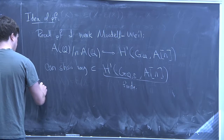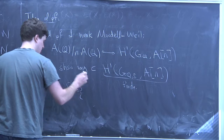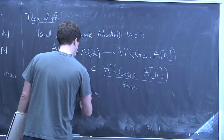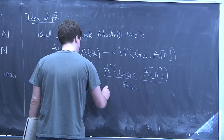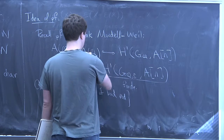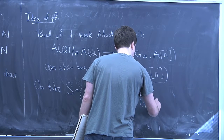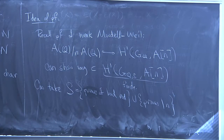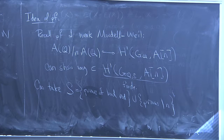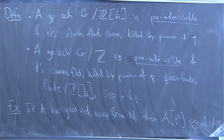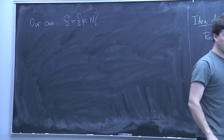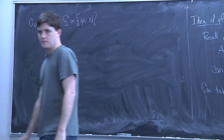In the general case you can take S to be the set of primes where A has bad reduction, together with the primes dividing N. In our case we're going to take N to be a power of P — P^n — and so we can take S just to be the set {P, N}. So these H^1 classes we're getting are going to be unramified away from just two primes.